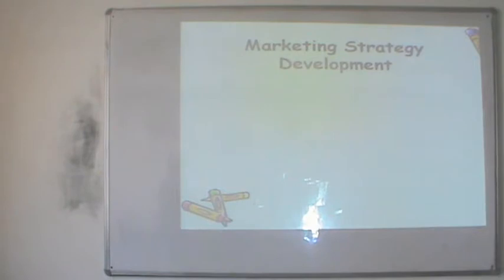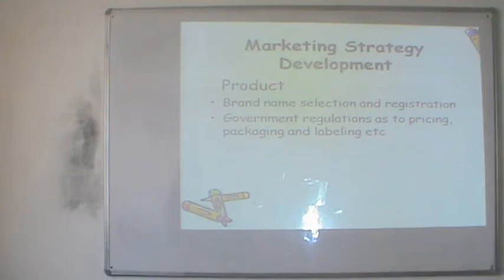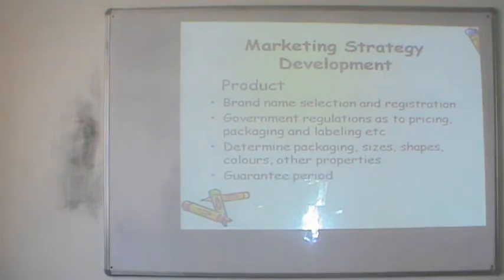Step four is market strategy development. For the first time, the company starts thinking in terms of the 4 Ps. The company sets out to answer: what would the product be like, what would its brand name be, for which type of consumers, decisions related to government regulations on packaging and labelling, what shape, colour, variants, and properties it would have, and whether a guarantee period would be offered. The second decision is to finalise the pricing strategy — skimming, penetrative, or premium pricing — and what margins would be offered to dealers and distributors, discounts for bulk sales, and credit policy.